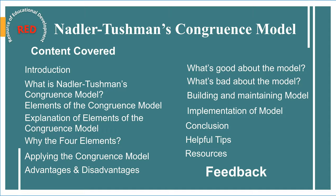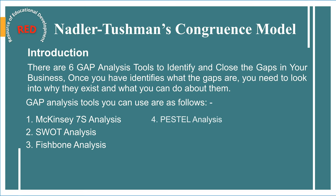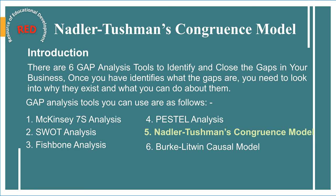There are six gap analysis tools to identify and close the gaps in business. Once we have identified what the gaps are, we need to look into why they exist and what we can do about them. We already learned about McKinsey 7S, SWOT analysis, fishbone analysis, and PESTEL analysis — videos already available on my channel. Today we will learn the fifth tool, Nadler-Tushman's congruence model. The last tool, the Lewin causal model, will be covered in my upcoming video.